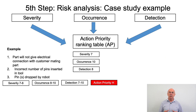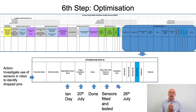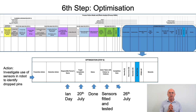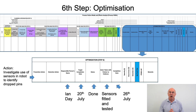To recap the case study example from step five risk analysis: for the failure mode where pins could be dropped by the robot, we came up with an action priority ranking of high. The team said: we have a high risk, what can we do to reduce it? Someone on the team was allocated an action to investigate the use of sensors in the robot that would immediately detect if a pin had been dropped. This was allocated to Ian Day, with a target completion date of the 20th of July.